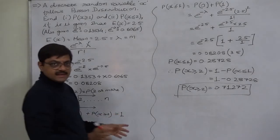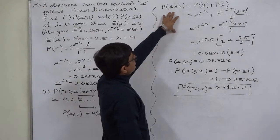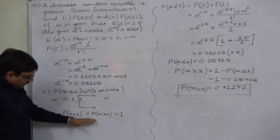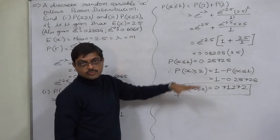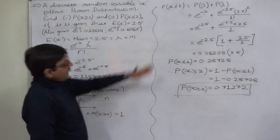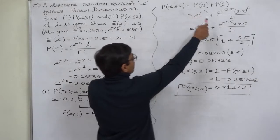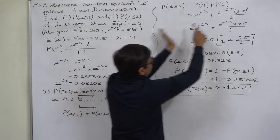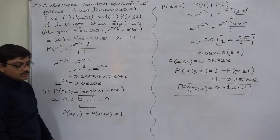I explained the entire process in two steps: first, calculation of P(X ≤ 1), and then using the complement equation to get P(X ≥ 2). After thorough understanding of these two steps, you can also find the answer directly in one step — write the entire expression as a subtraction from 1 to get 0.71272 directly.